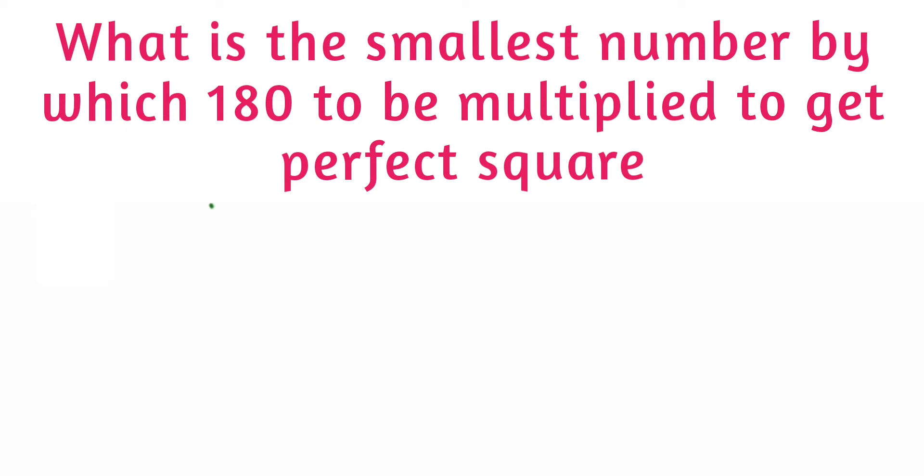Hey everyone, so today's question is: what is the smallest number by which 180 must be multiplied to get a perfect square? 180 is not a perfect square, so we have to multiply it with the smallest number to make it a perfect square.